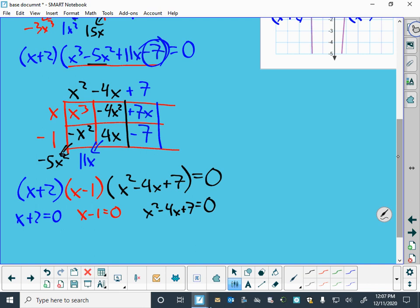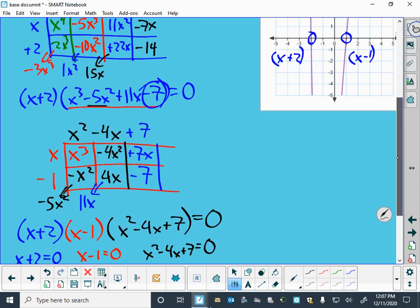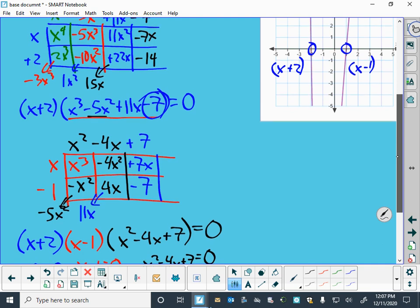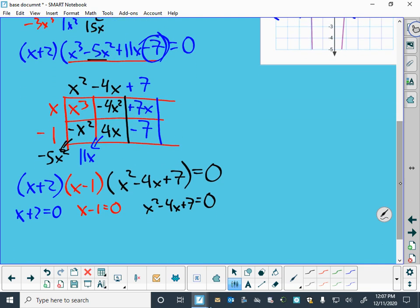or x squared minus 4x plus 7 has to equal 0. It's quadratic, so factoring is a possibility, except that my graph doesn't indicate that this crosses the x-axis anyplace else. So I suspect what I actually have here are some complex number solutions. It won't factor. I can't find two numbers that multiply together to give me 7 and add together to give me negative 4.